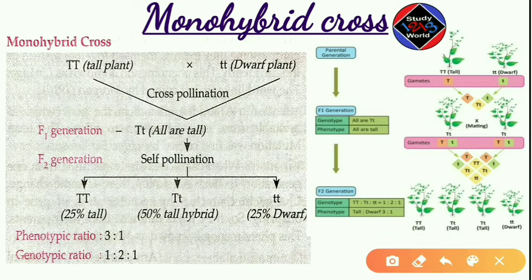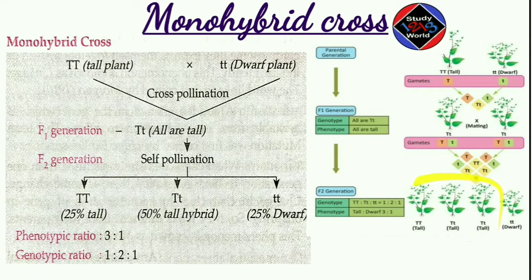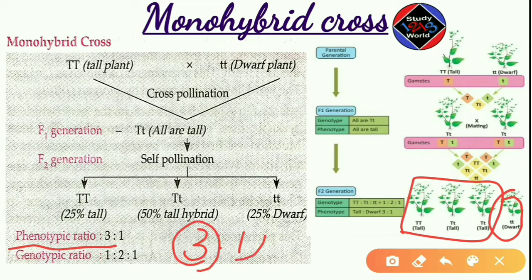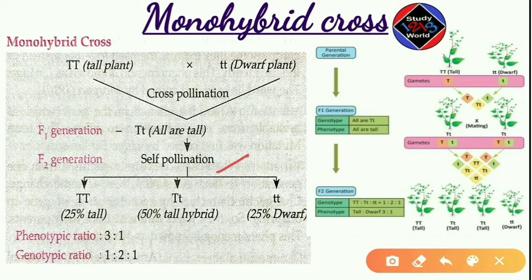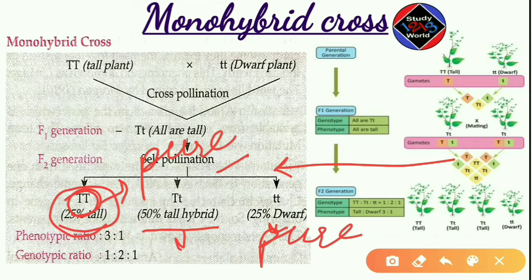Now for the phenotypic ratio: any plant which has a capital T will show the character of tall. Three plants have capital T, so three will be tall and one will be dwarf. The phenotypic ratio is 3:1 — three tall and one dwarf. When these plants are self-pollinated, 25% will be pure tall (capital T capital T), one will be pure dwarf, and one will be hybrid.